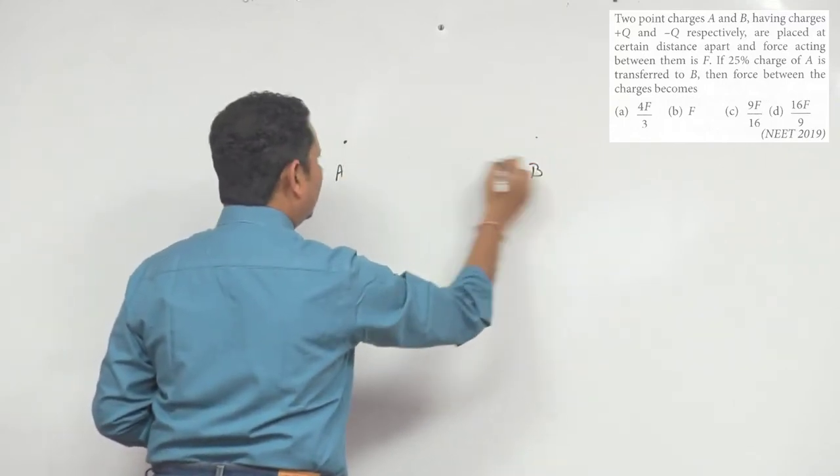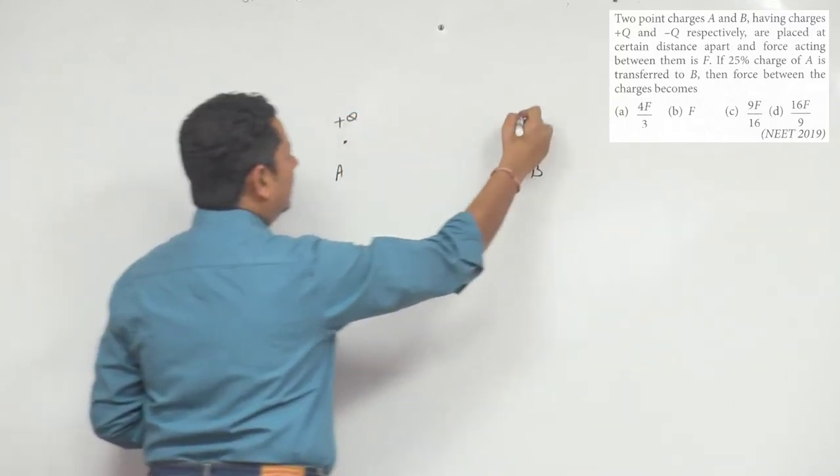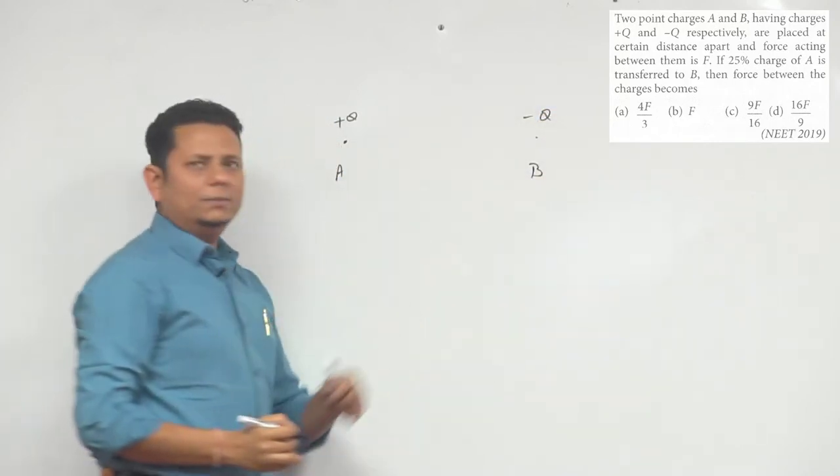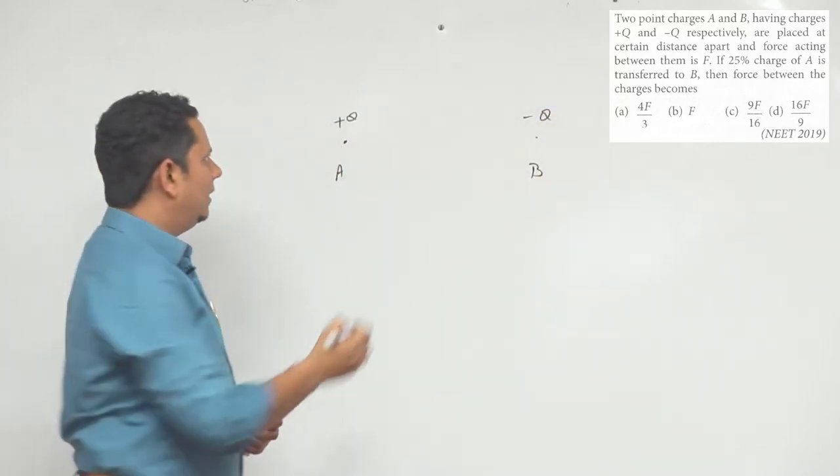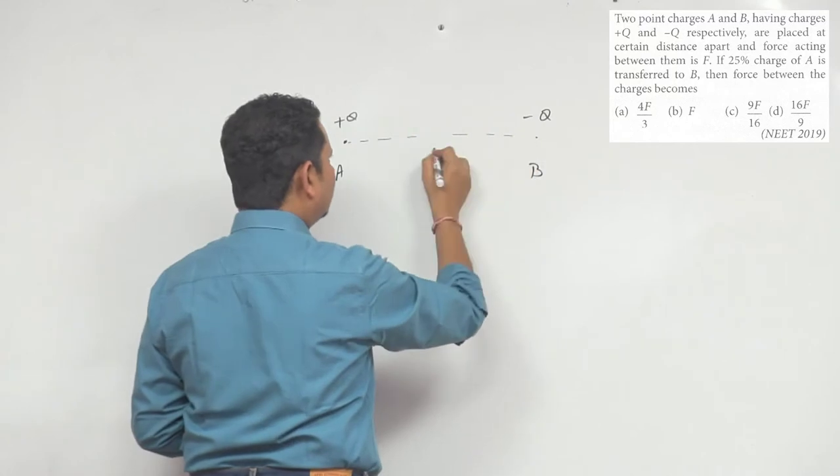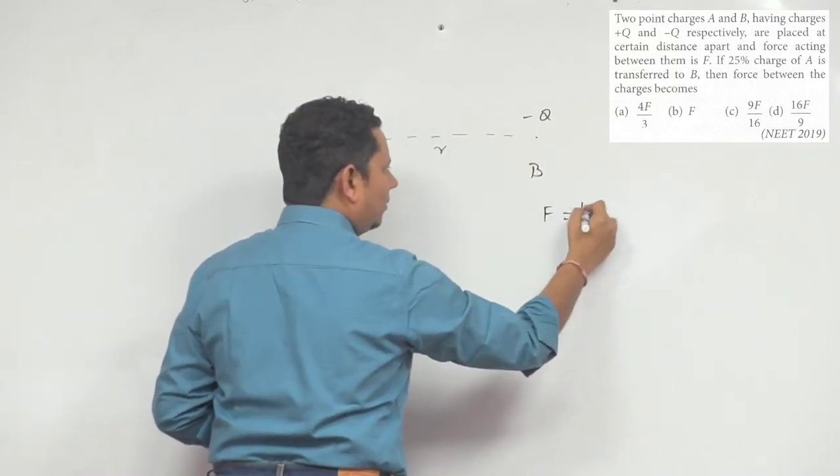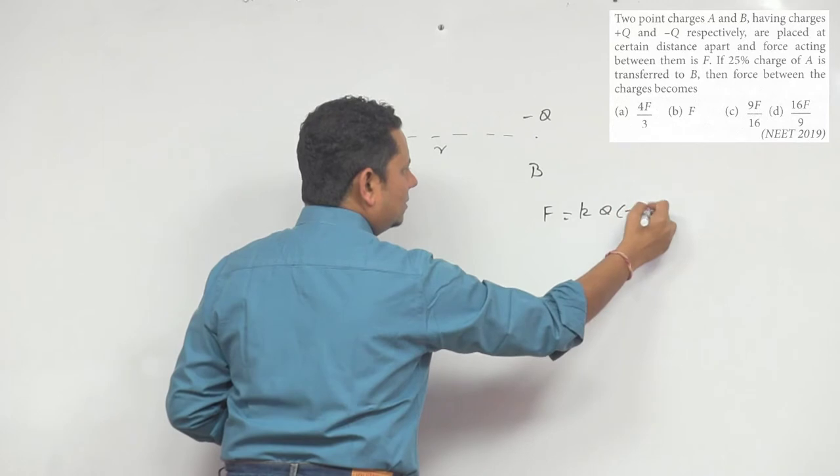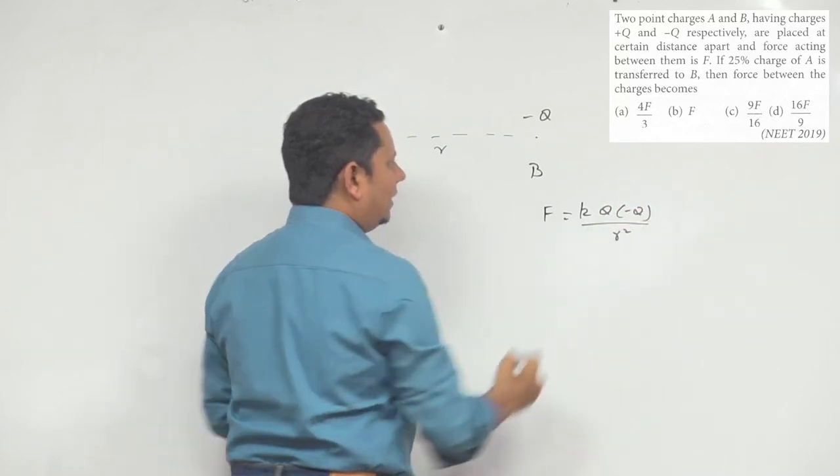and B. You have +Q charge and -Q charge. These are placed at a certain distance r. So the force between them will be equal to k·Q·(-Q) divided by r², which is your force.